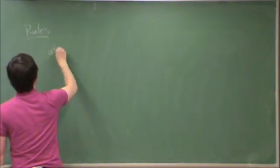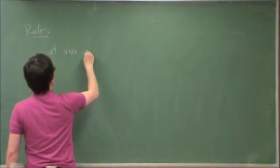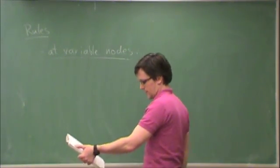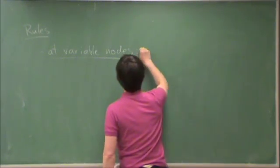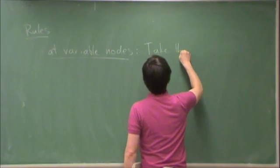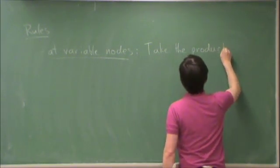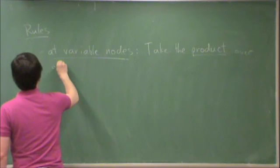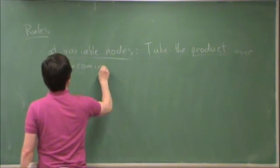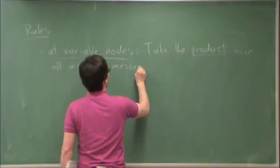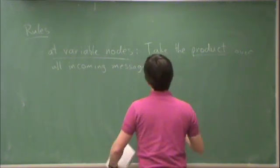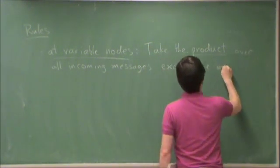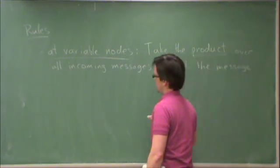At variable nodes, what you do is you take the product over all incoming messages except the message from the outgoing edge.